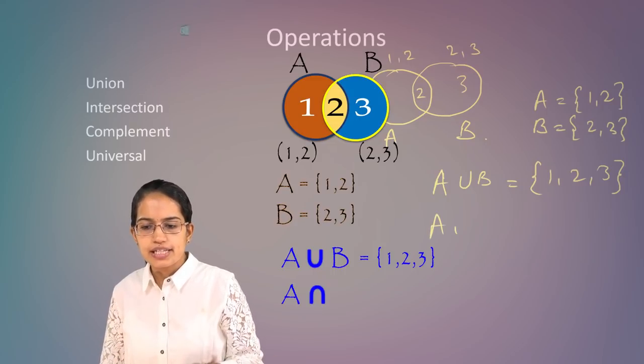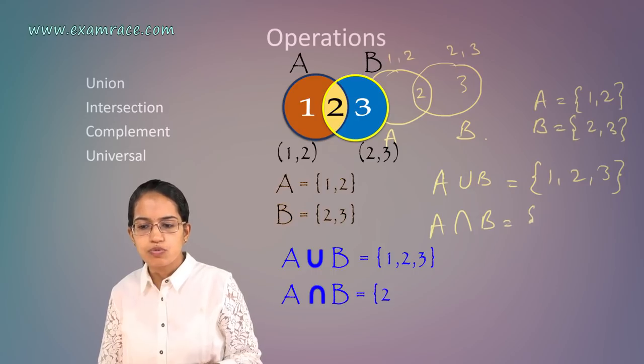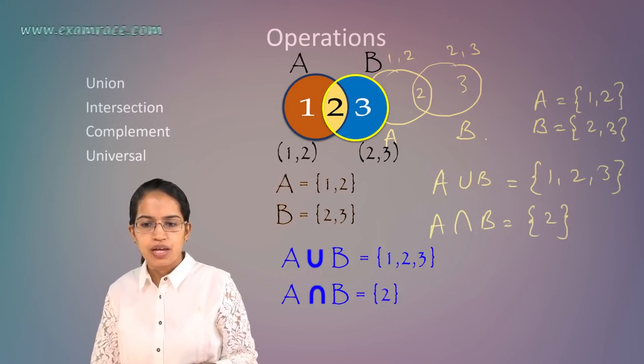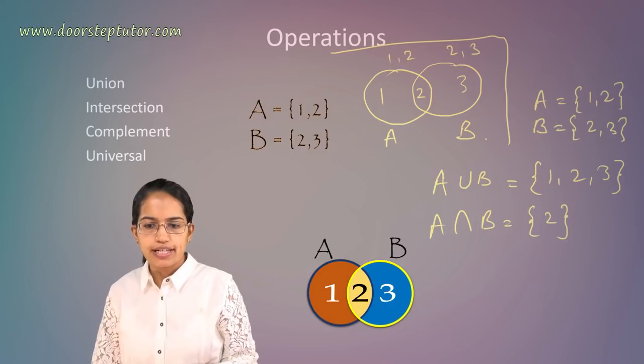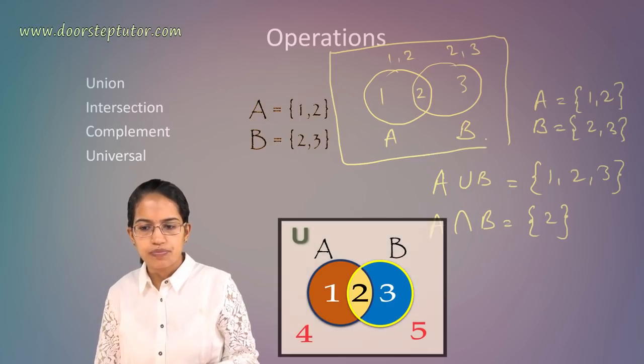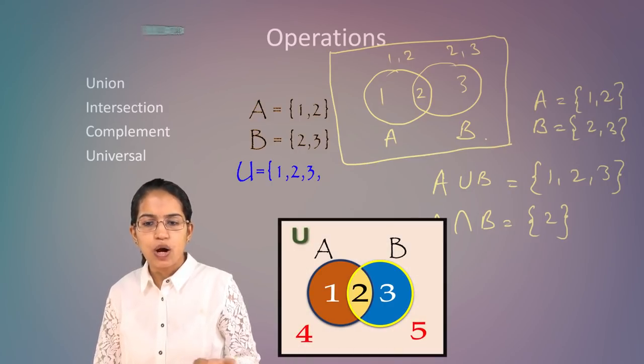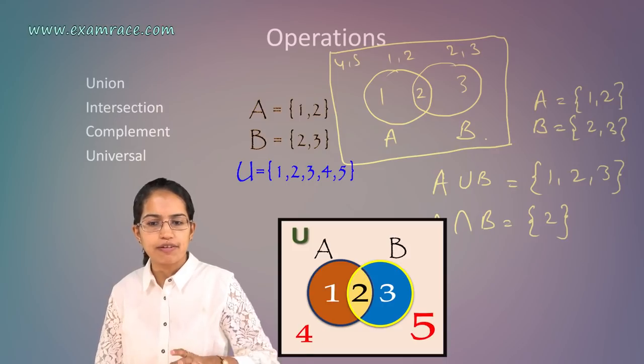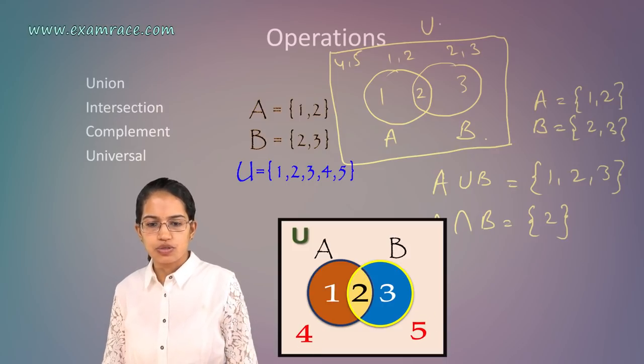A intersection B would be what? Would be the thing that's common, that's 2. Now this whole lies within a universe and that universe is 1, 2, 3, 4, 5. 4 and 5 are outside and this is the universe.